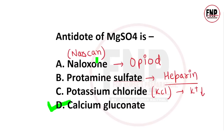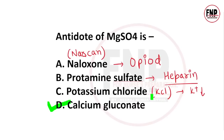Remaining options: opioid substance toxicity mein naloxone diya jata hai, jise aap Narcan ke naam se bhi jaante hain. Heparin drug ki toxicity mein antidote ke roop mein protamine sulfate diya jata hai. Agar client ki body mein potassium ki kami hai to potassium chloride diya jata hai. Yaad rakhiyega, potassium chloride ko kabhi bhi bina dissolve kiye direct inject mat lagayein — hamesha dissolve karke bahut hi slow IV push karein ya infusion pump ka istemal karein, warna client ka heart kaam karna band kar jayega.